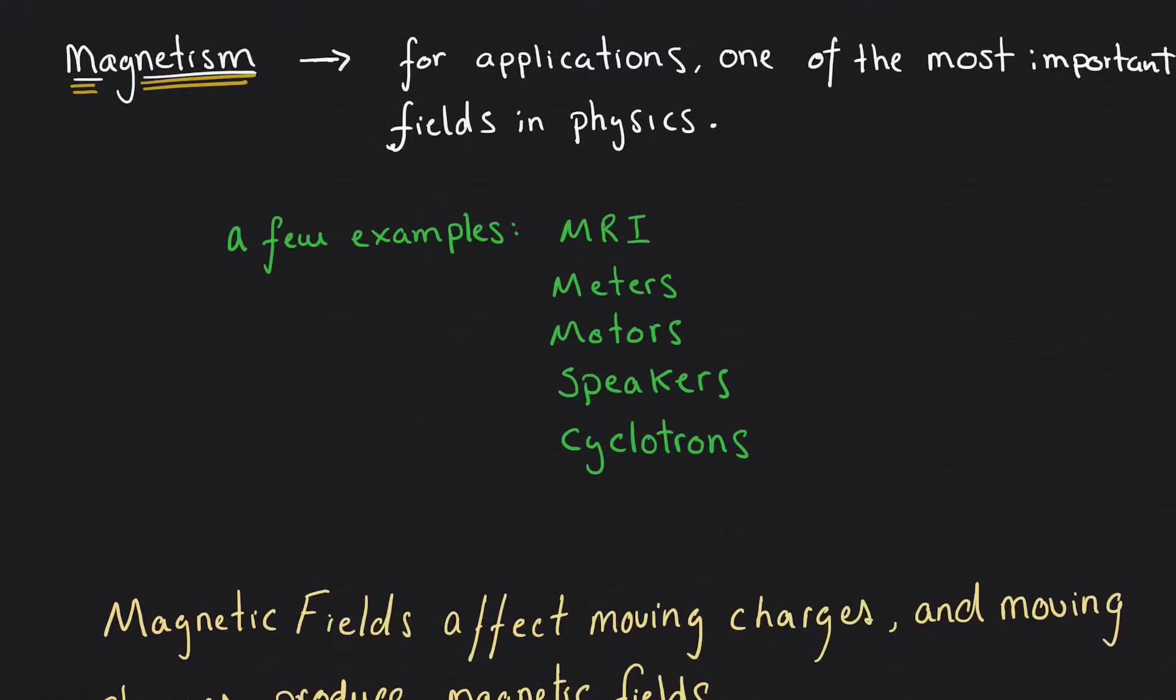If we focus on applications, then magnetism is actually one of the most important fields in physics because its direct and indirect applications are so vast. We can see magnets or applications of magnetism in MRIs, meters, motors, speakers, cyclotrons, just to name a few.